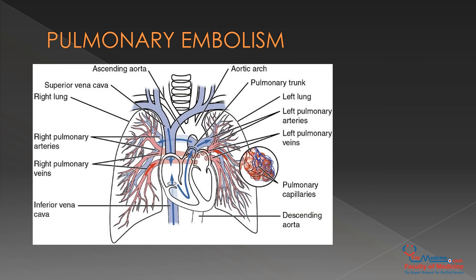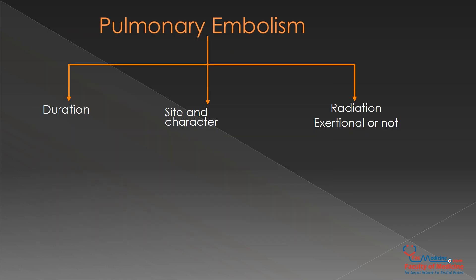Pulmonary embolism is a condition where an embolus travels from the venous system into the heart, and from the heart it escapes into the pulmonary arteries — either the main pulmonary trunk or its branches into the right and left pulmonary arteries. The duration of this pain is seconds to minutes. The site is at one side of the chest, and its character is sharp and pleuritic, meaning the pain increases when the patient takes a breath. It does not radiate, nor is it preceded by exertion.